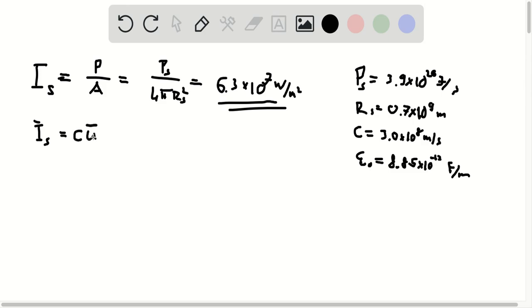And in turn, U bar is actually equal to a half of epsilon 0 times E max squared. Or equivalently, it is equal to C times 1 over 2 mu 0 B max squared.